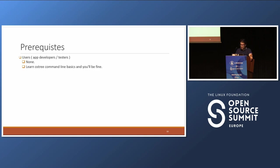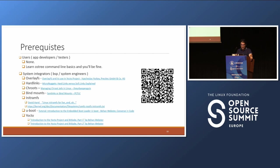As far as prerequisites, if you're a user of OSTree — meaning an application developer or tester — there are none. Just learn a few OSTree command-line basics and you'll be fine. However, if you're a system integrator, BSP developer, or system engineer, there's a lot more to learn. You have to know about overlay filesystems, hard links, true roots, bind mounts, initramfs, u-boot, and the Yocto build system.